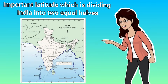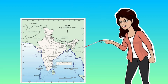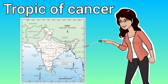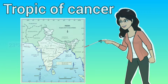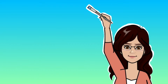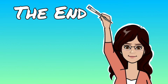One more important latitude divides India into two equal halves. The name of this latitude is the Tropic of Cancer, and its value is 23 degrees 30 minutes north.